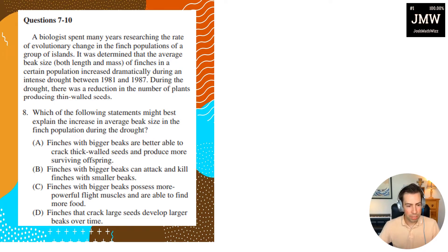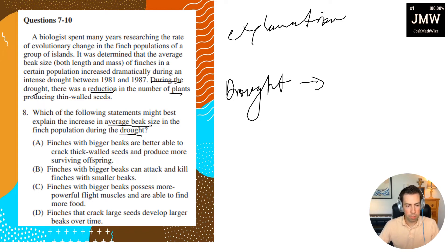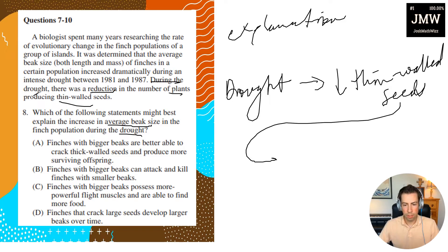Which of the following statements might best explain the increase in average beak size in the finch population during the drought? So now we want an explanation. Let's just do a basic flow chart. So we have drought, right? And that caused what? Well, right here it says during the drought there was a reduction in the number of plants producing thin-walled seeds. So the drought caused thin-walled seeds to decrease. And because of this, beak size increased. So basically I want to make an assumption that is the most valid and least arbitrary. So let's look at our answer choices.